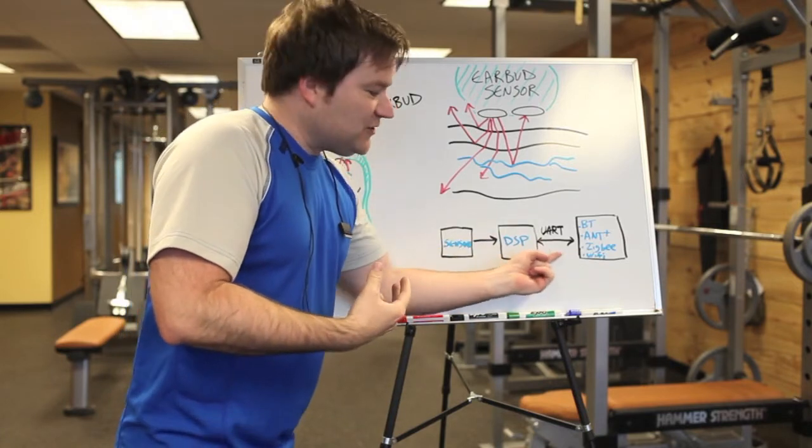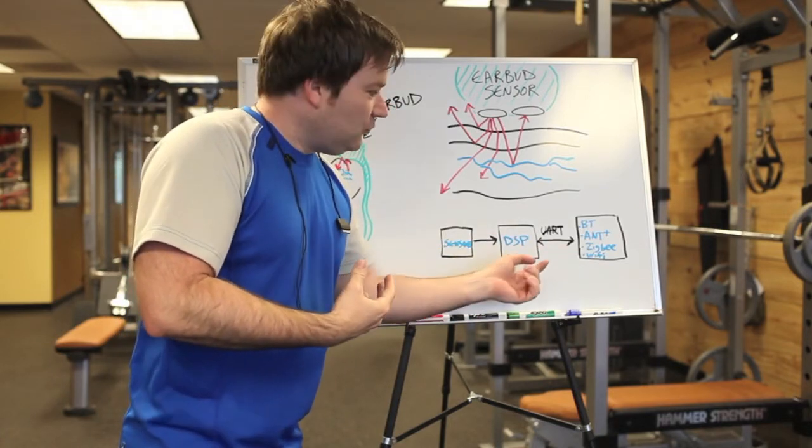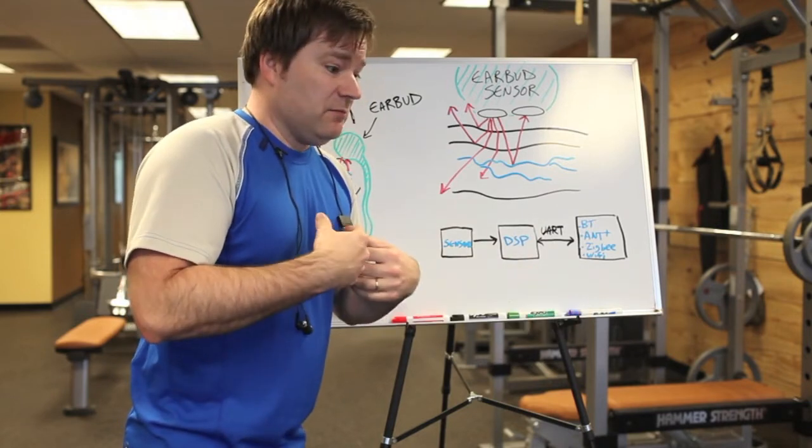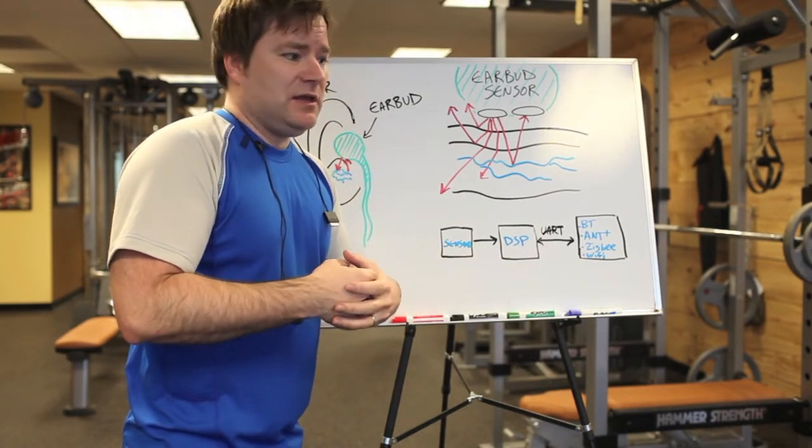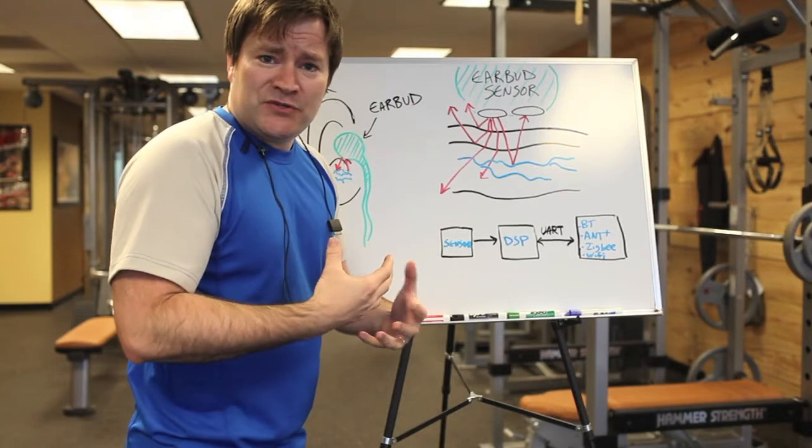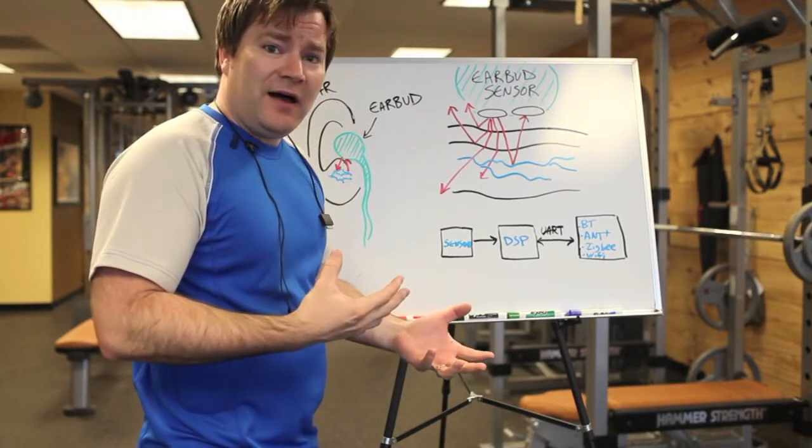And it communicates through a simple UART profile to any other chip. It could be a Bluetooth chipset, an Ant Plus chipset, a Zigbee chip, Wi-Fi, you name it.